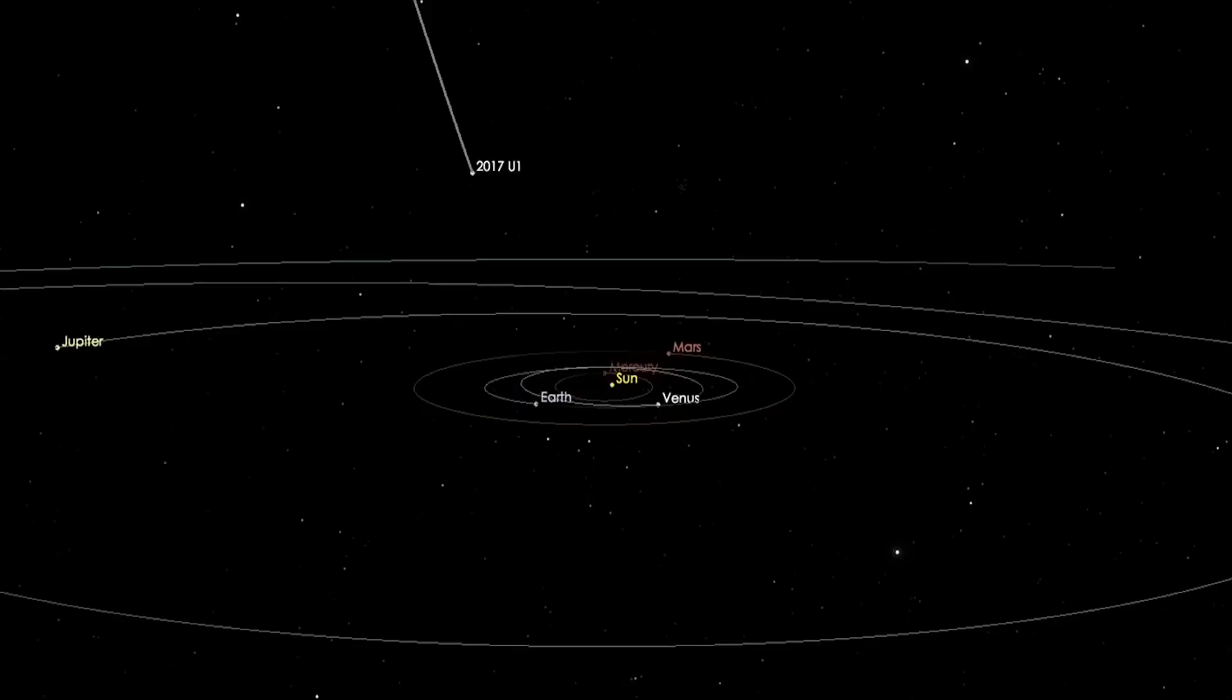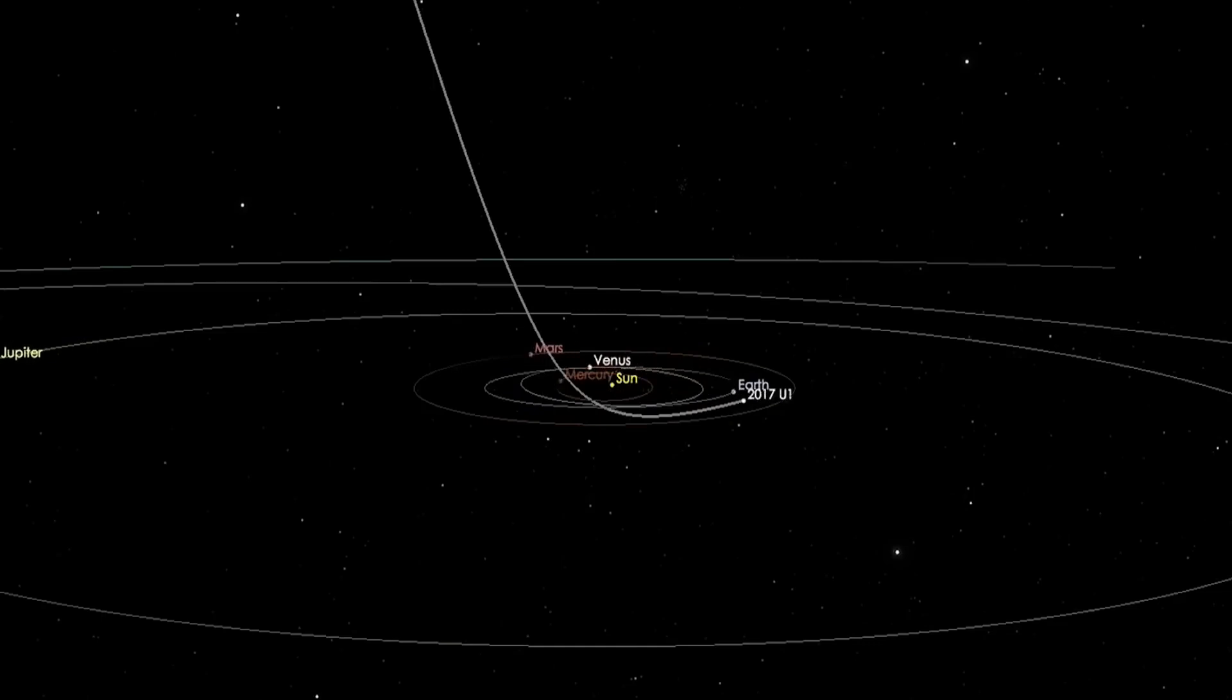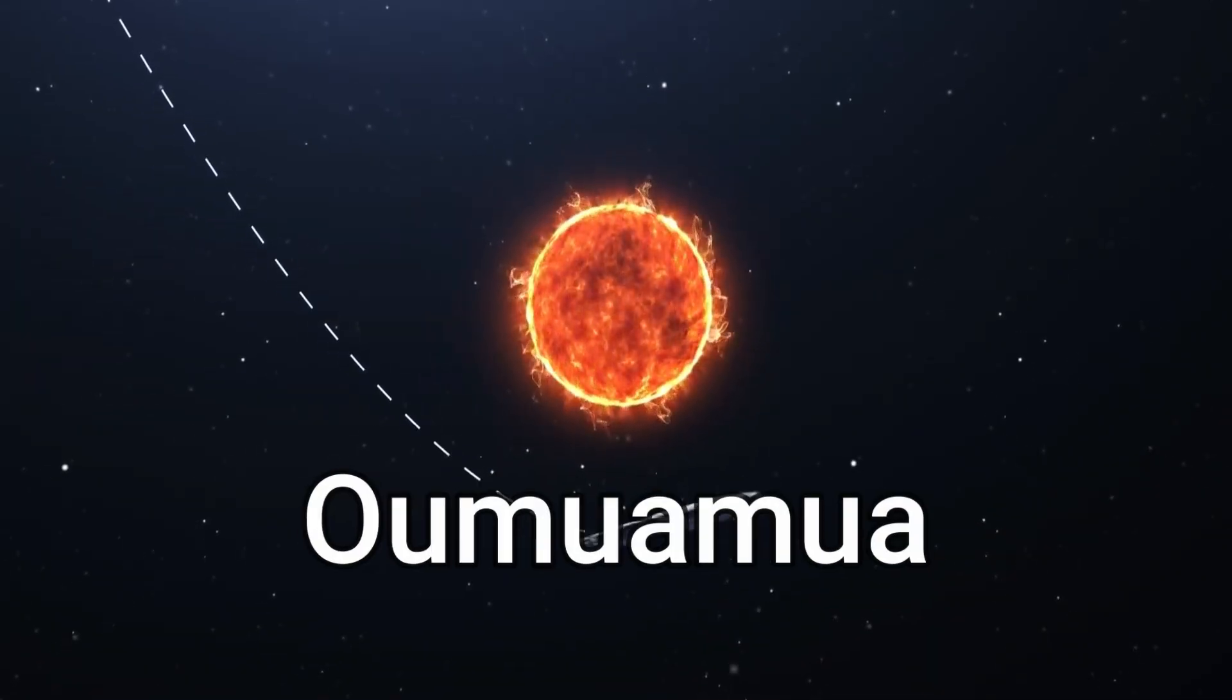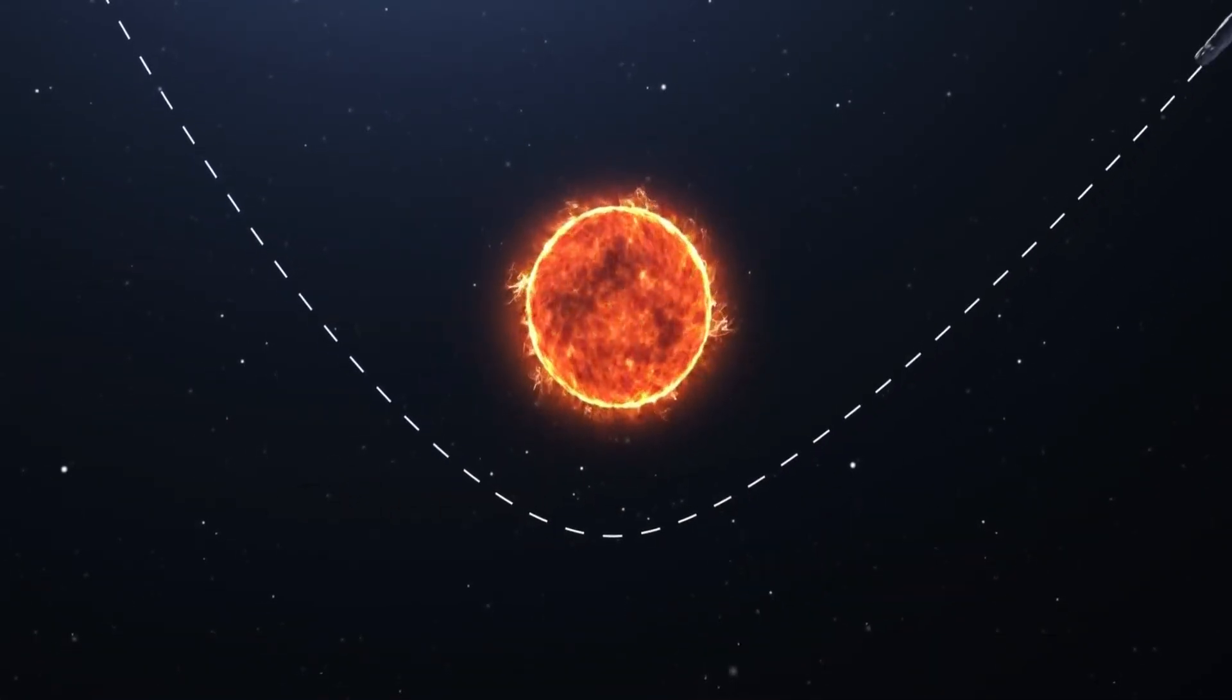One would anticipate a celestial object to maintain a consistent speed, right? Well, Oumuamua defied that expectation. It appeared to chart its own course at a distinctive speed, sparking discussions suggesting it might be a comet.